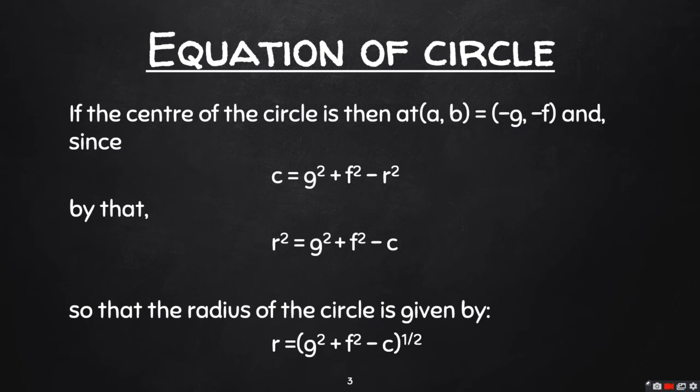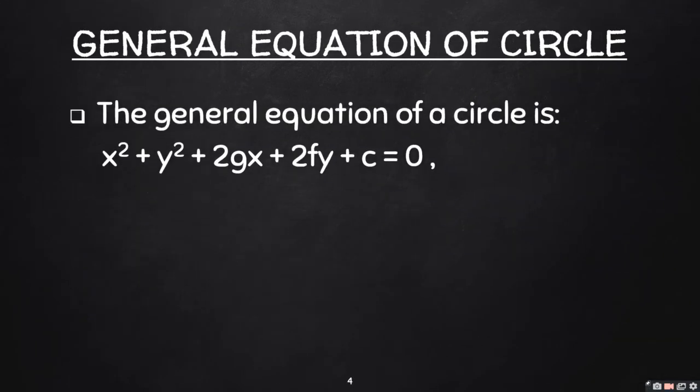So the radius of the circle will be given as r = √(g² + f² - c).